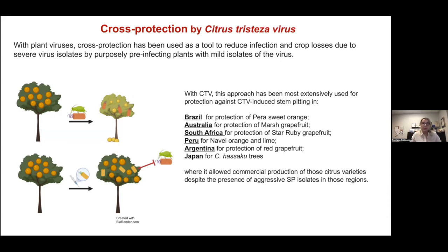With plant viruses, cross protection has been used as a tool to reduce infection and crop losses due to severe virus isolates by purposefully pre-infecting plants with mild isolates of the virus. Specifically with citrus tristeza virus, this approach has been most extensively used for protection against CTV-induced stem pitting in several countries including Brazil, Australia, South Africa, Peru, Argentina, and Japan — where pre-immunization of trees with mild virus isolates protects against severe disease-causing isolates. This approach allowed commercial production of many different citrus varieties despite the presence of aggressive stem-pitting isolates in those regions.